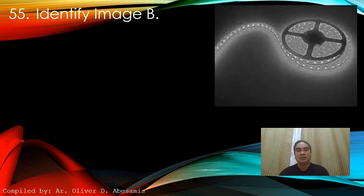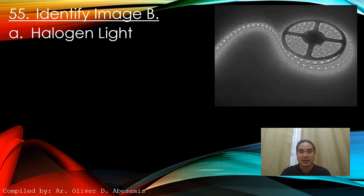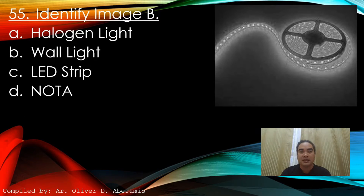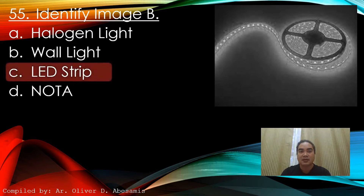Identify the image. A. Halogen light. B. Wall light. C. LED strip. D. None of the above. Answer: C. LED strip.